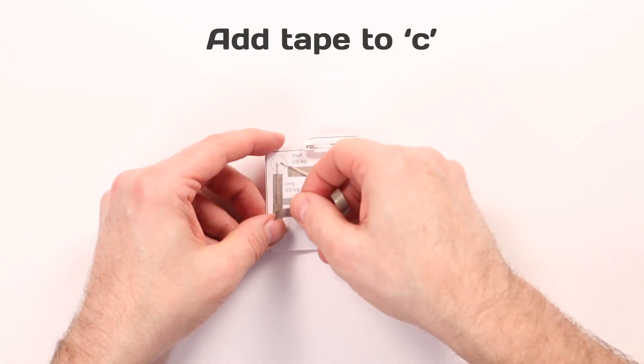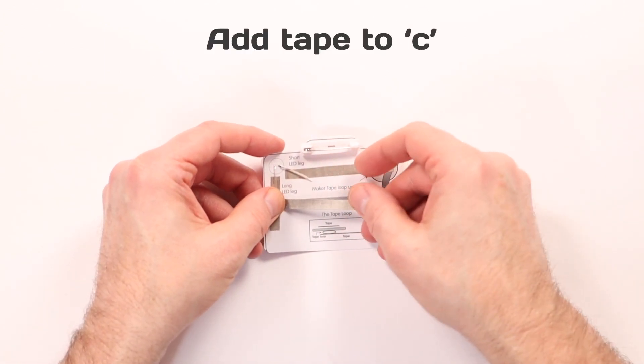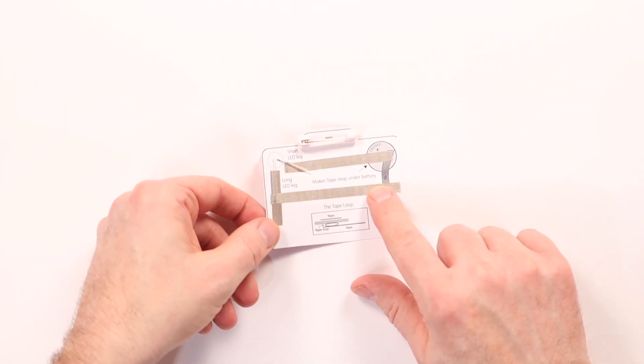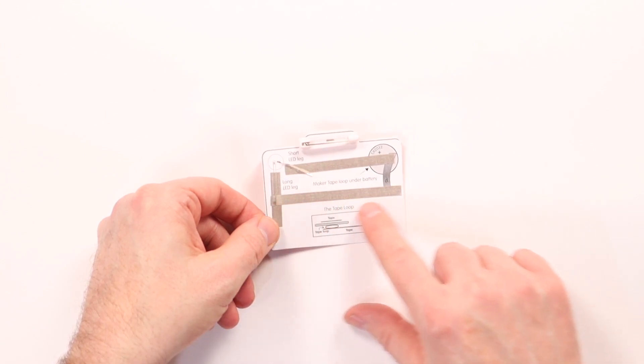We're going to add our third piece of tape, labeled C, connecting that way. That needs to connect to this long leg and run down here below where the battery is going to go.